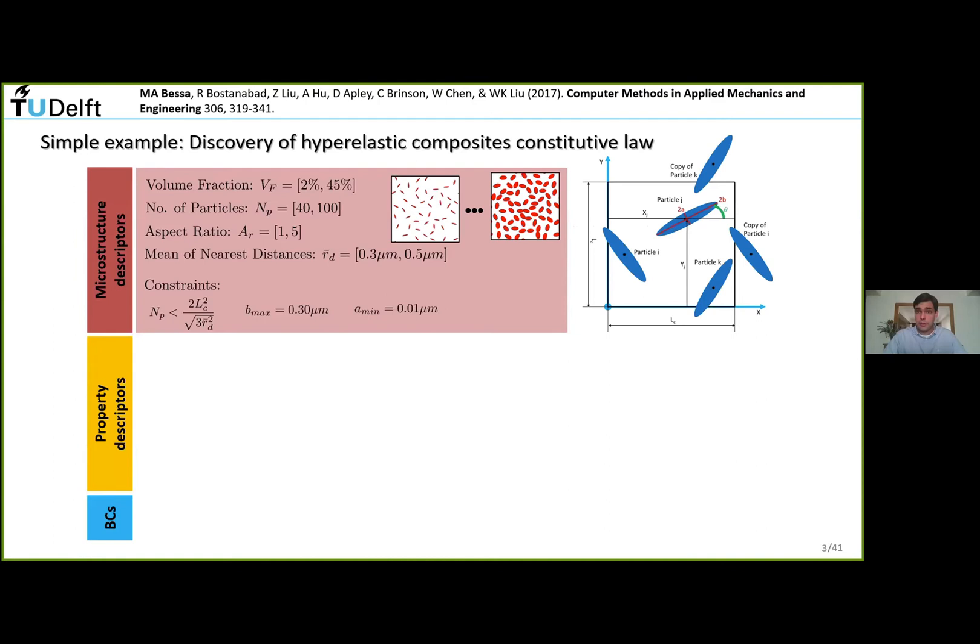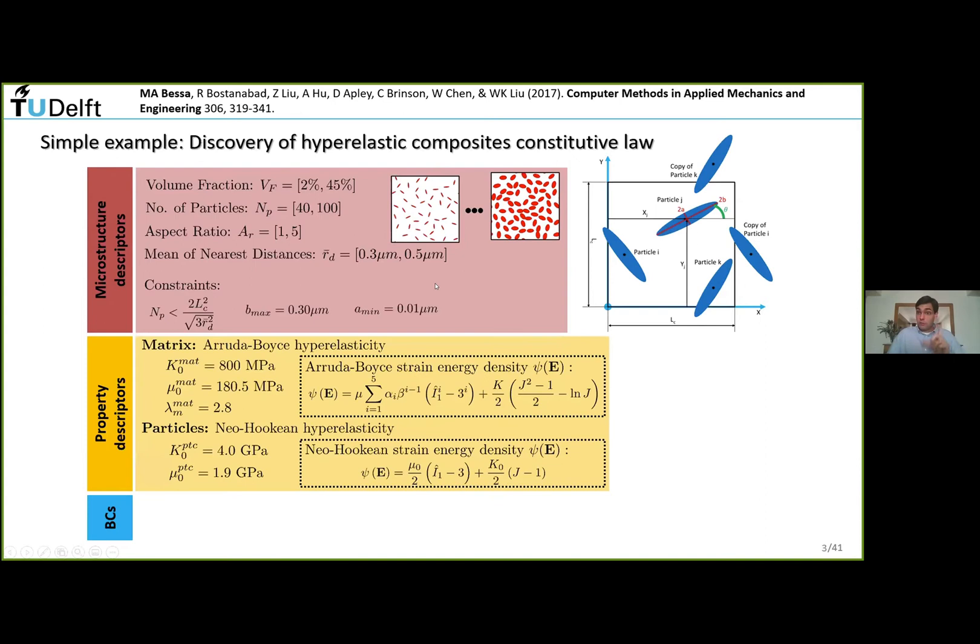Let's start with a simple example with composite materials. You have a matrix, which could be a polymer or rubber, and some particles that could be elliptical. You define microstructure descriptors - the volume fraction of the material, number of particles, aspect ratio (circles or ellipses), and mean of nearest distances between ellipses.